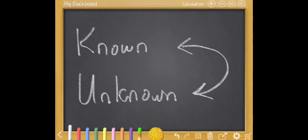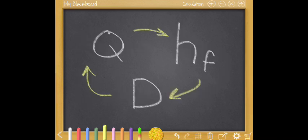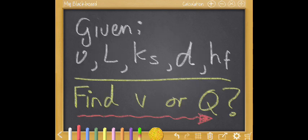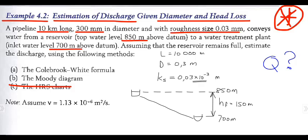But what happens if we swap knowns and unknowns around, especially Q, HF and D? Consider example 4.2 in your textbook where you had to find the discharge given known diameter and head loss.